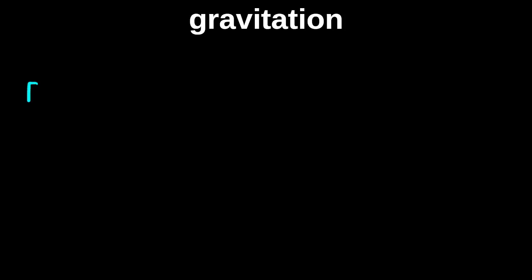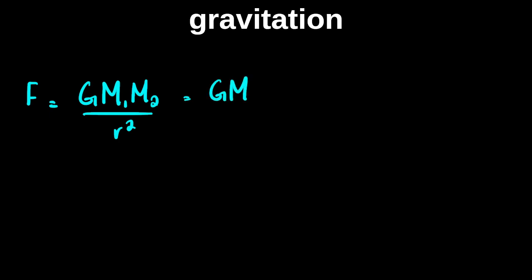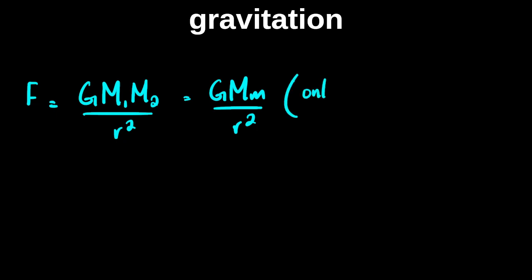What we talked about last time was this formula — you can write it as G*m1*m2 / r² or G*M*m / r². Newton's law of gravitation says that the force is directly proportional to the product of the masses and inversely proportional to the square of their separation. The distance is measured between their centers because this law holds true only for point masses.